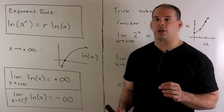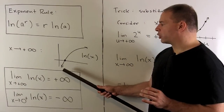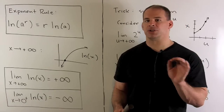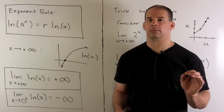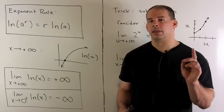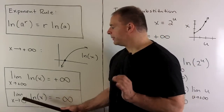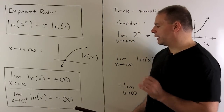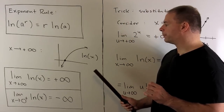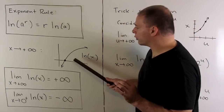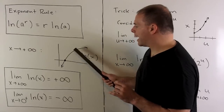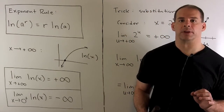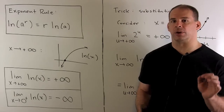They grow very slowly. From the graph it looks like it could go off to a horizontal asymptote, but it's just going to keep growing. Then, the limit as x goes to zero from the right of natural log of x is equal to minus infinity. As we come into zero from the right, the values of natural log of x are just going to spike down to minus infinity, so we're going to have a vertical asymptote at zero.